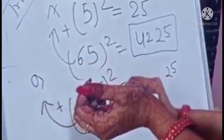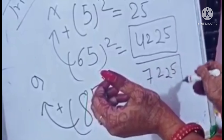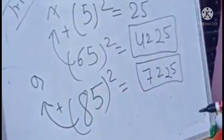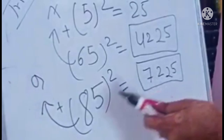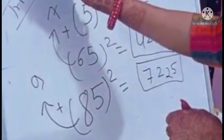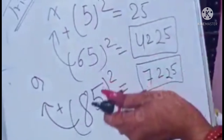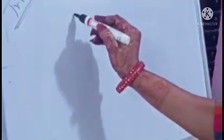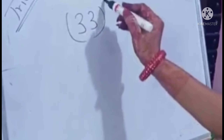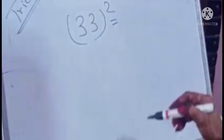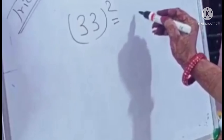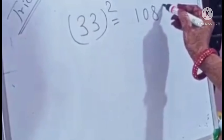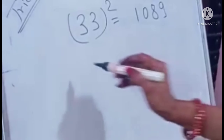Now the second example. Suppose I have to multiply 105 and 107. So again, 105 is 5 more than 100 and 107 is 7 more than 100. We make a cross sign and just add the numbers. We can add 107 to 5, or 105 to 7 — it will be 112. I write here 112. Now second step: the numbers are 5 and 7, we multiply them: 5 × 7 = 35. That is your answer.